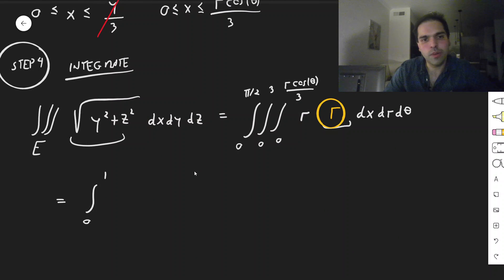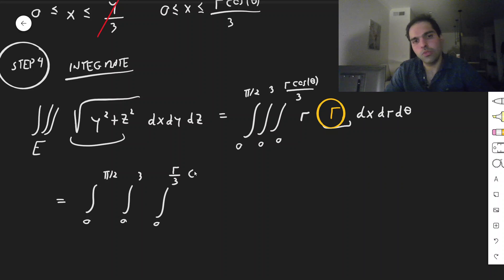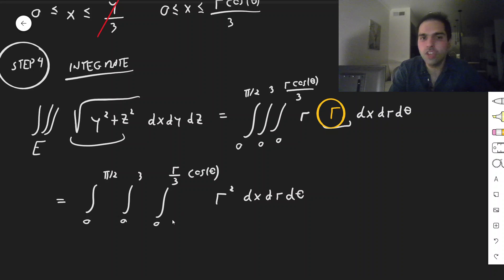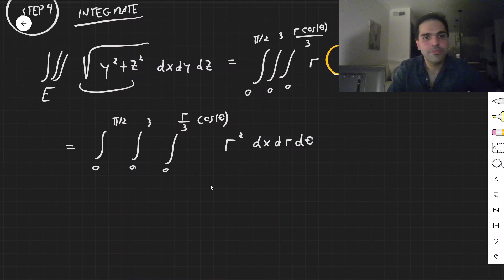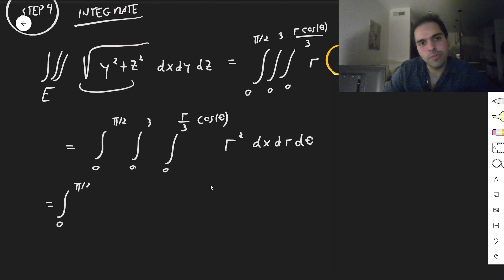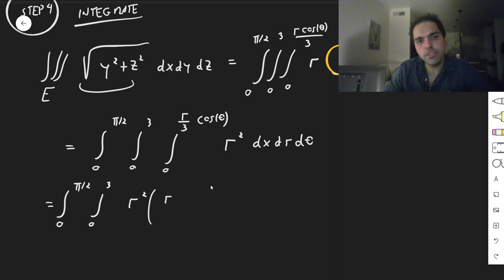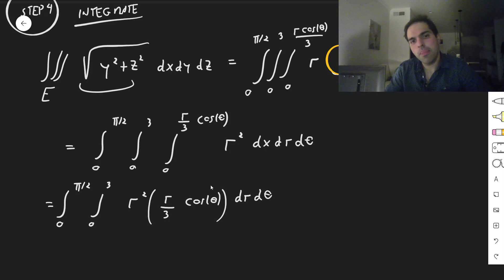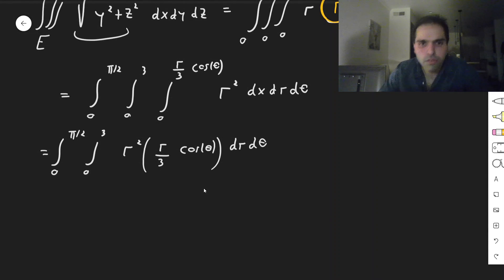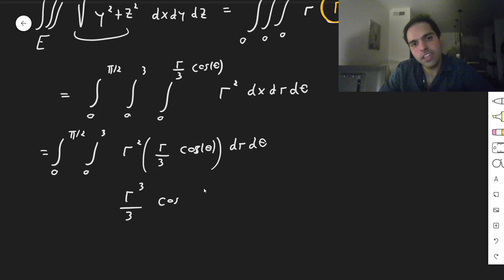So it's the integral from 0 to pi over 2, 0 to 3, 0 to r cosine theta over 3, of r squared dx dr d theta. The nice thing is there is no x in the integrand, so integrating over x is just r cosine theta over 3. So we get the integral from 0 to pi over 2, integral from 0 to 3, of r squared times r cosine theta over 3, dr d theta. You can write this as r cubed over 3 cosine theta.